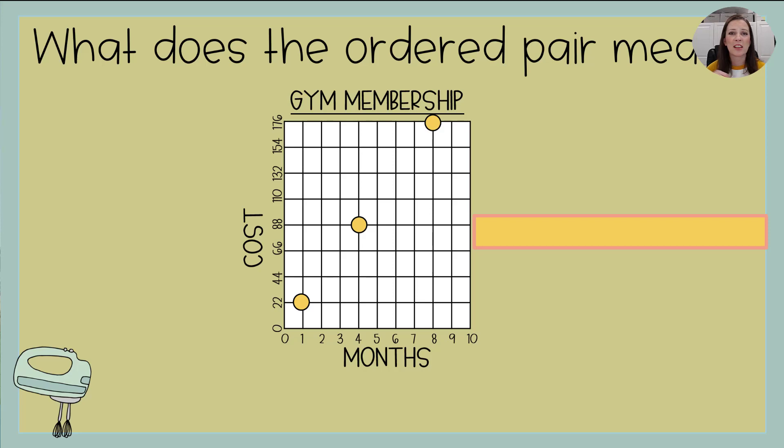All right. One last piece. This is our last learning goal. What does an ordered pair mean? So the title of this graph is gym membership. I've got months along the x-axis. I've got costs along the y-axis. And I want to know what this ordered pair right here means. So my first question is, what is the ordered pair? Well, the ordered pair in this case is 1, 22. It's the x and then the y. It's that ratio. So we have to remember, just like we said a few minutes ago, the x always comes first. So the x is 1. That comes first in my ordered pair. Now, what does that 1 and that 22 tell us?